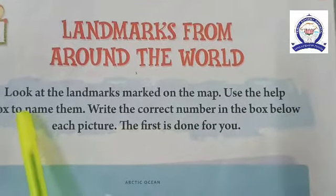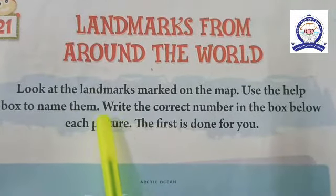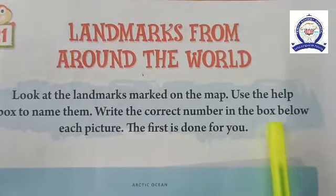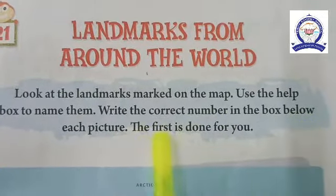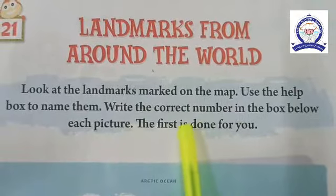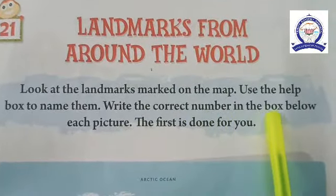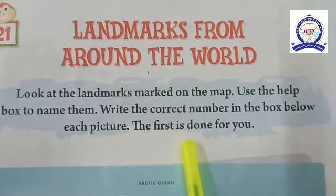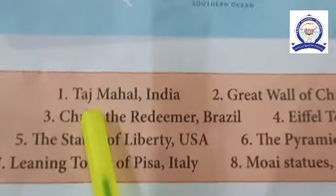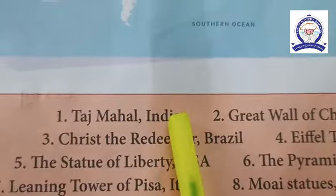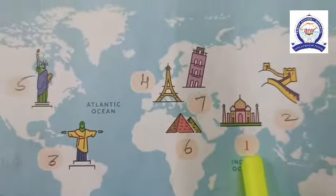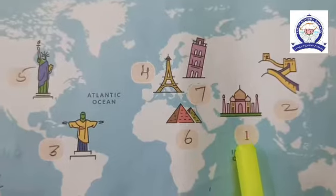Use the help box to name them. Write the correct number in the box below each picture. The first one is done. The first one is Taj Mahal. Taj Mahal is in India, so the answer is number 1.